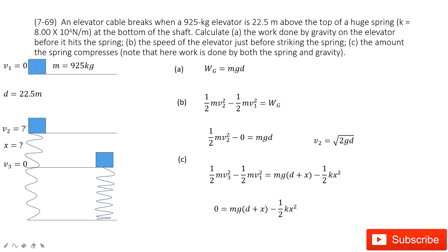This velocity v2 we don't know, so we need to find it out. The object keeps moving down and compresses the spring. Finally, it reaches stationary — velocity v3 is 0. The spring is compressed, and the distance it moved during compression we consider as x. So this is what happened.